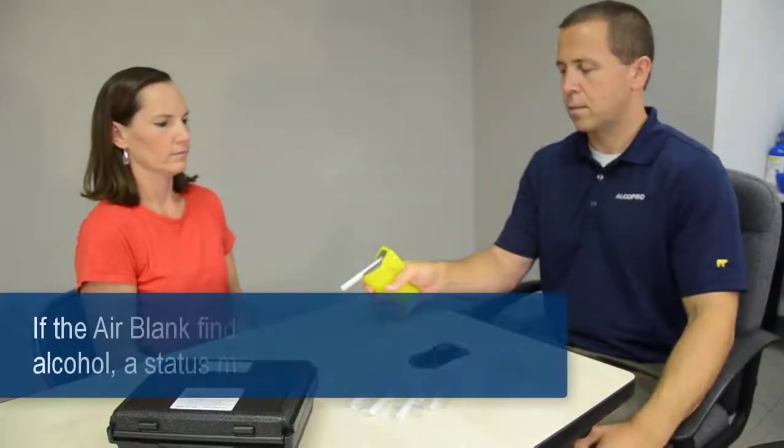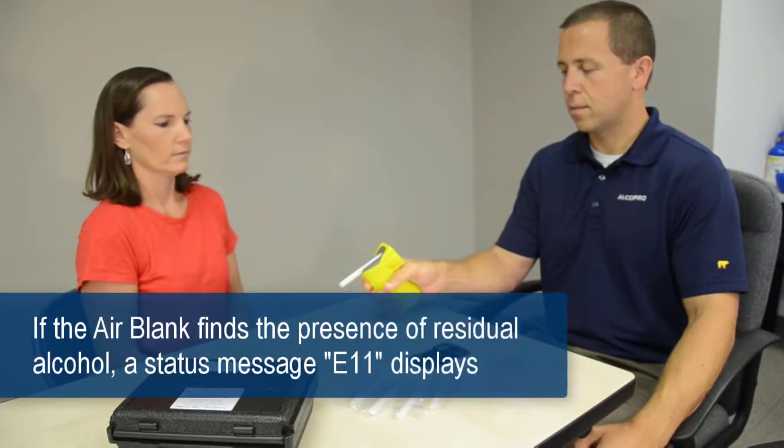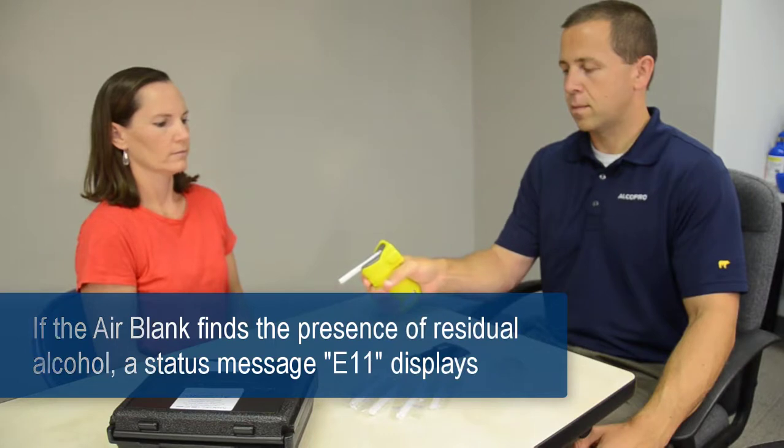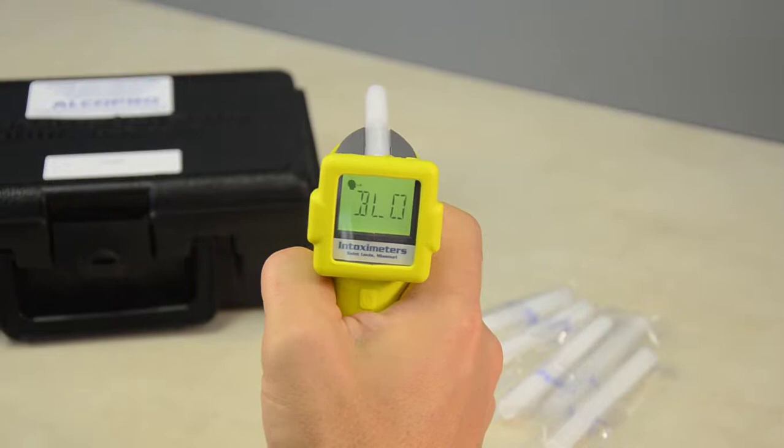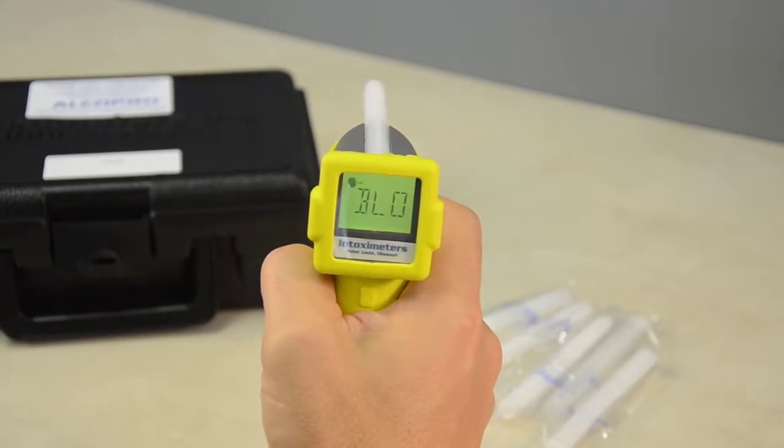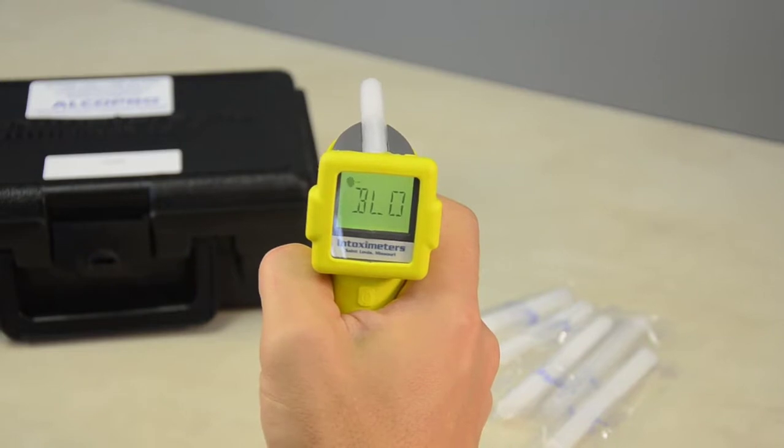If the airblank finds the presence of residual alcohol, a status message of E11 displays and the test sequence is aborted. Next, the display shows the icon of a person's head flashing, and BLO displays. This indicates the device is ready for a breath sample.